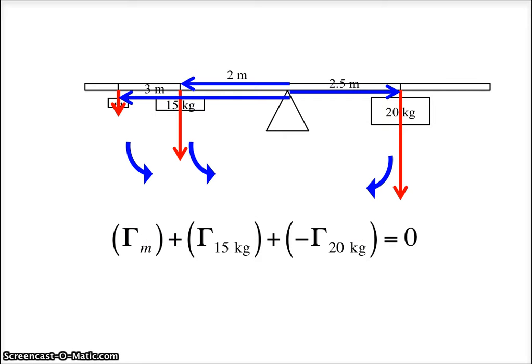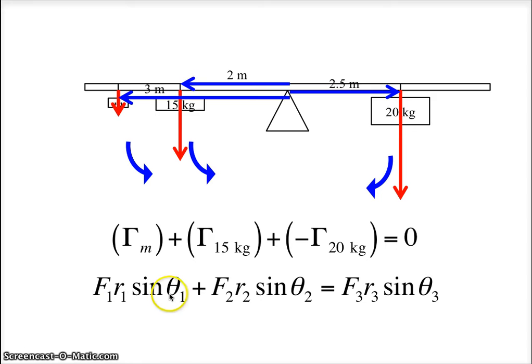So we can take this equation and rewrite it as FR sine theta, FR sine theta. Now the last FR sine theta, for 20 kilograms, I've moved over to the right side. So I've added this to the right side, so now it's positive again. In each case, the angle between the red line, the force, and the blue line, the distance, the angle is 90. And the sine of 90 is 1. That's true here, and here, and here. So we can take away the times 1.